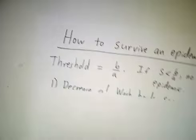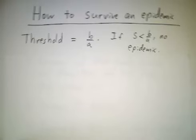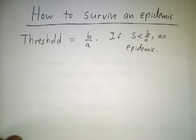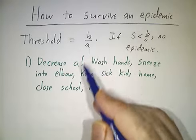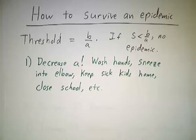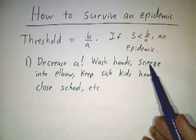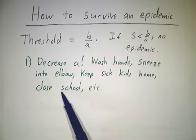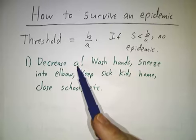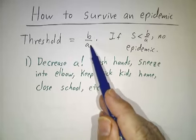So what are you gonna do if you're in public policy? Our threshold is B/A, and we want to have S less than B/A. So there are three things you can try. You can try decreasing A. A is the transmission coefficient. That has something to do with how easy it is to transmit germs. If you get people to wash their hands and to sneeze into their elbows rather than into their neighbors' faces, if you keep kids home, if you close schools if you have to, you can reduce the transmission coefficient. That makes the threshold higher. It makes it harder for the epidemic to get any traction.